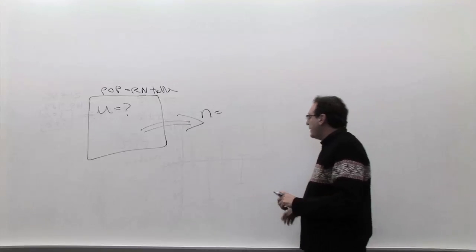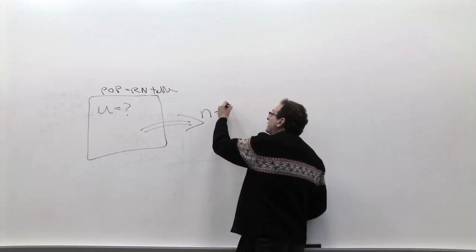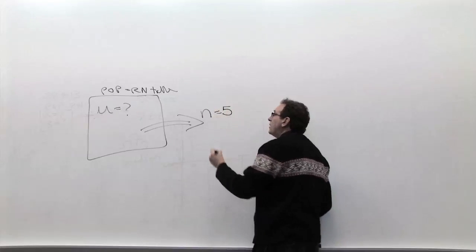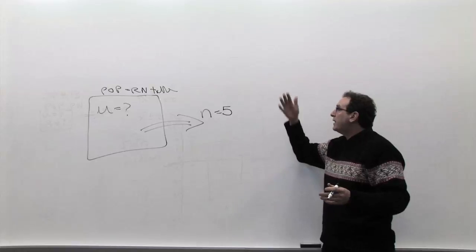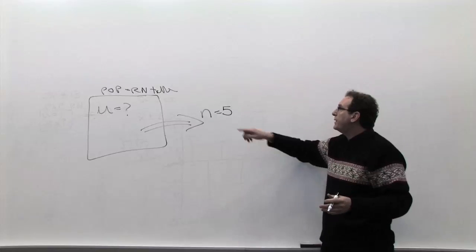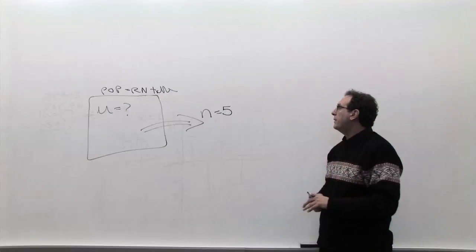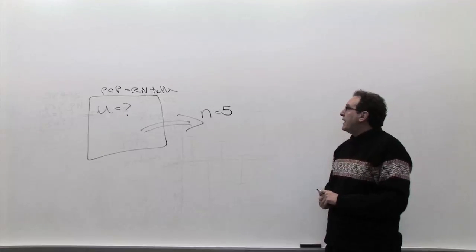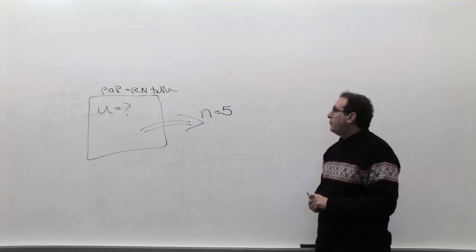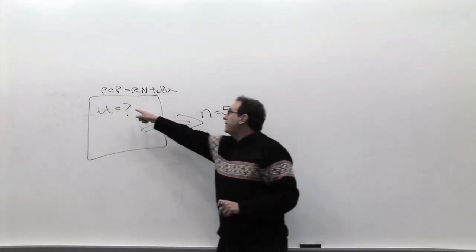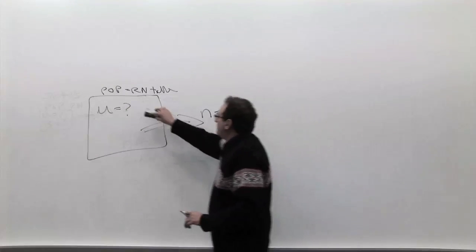So let's say the population is a random number table, and let's say the sample size is unrealistically small — five numbers. We have a lot of experience already taking samples of five numbers from the spinner assignment. So let's take a sample of five, and we know the answer is 4.5, but let's make believe we don't know that.